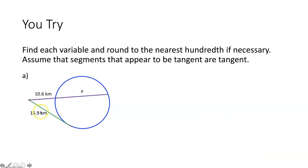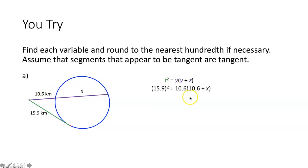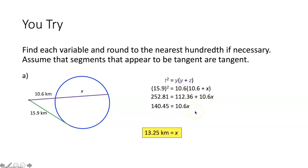Part A — we are again given a tangent and a secant that intersect at a point outside of the circle, and we are tasked with finding one of the secant segments. Using the tangent and secant segments theorem: 15.9 squared is set equal to 10.6 times the quantity 10.6 plus X. We square 15.9 on the left and distribute 10.6 on the right. Subtracting 112.36 from both sides and dividing both sides by 10.6, we get X is equal to 13.25 kilometers.